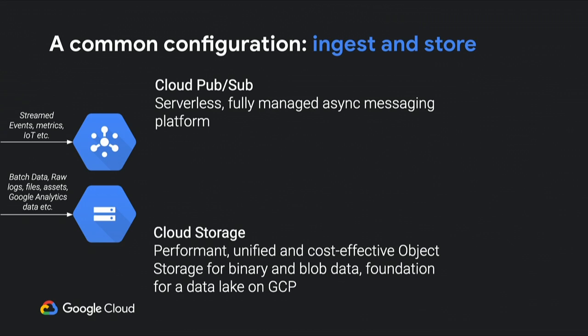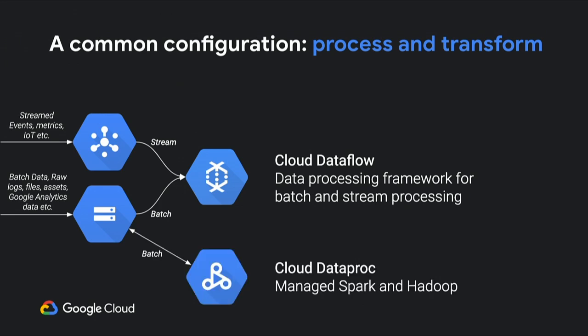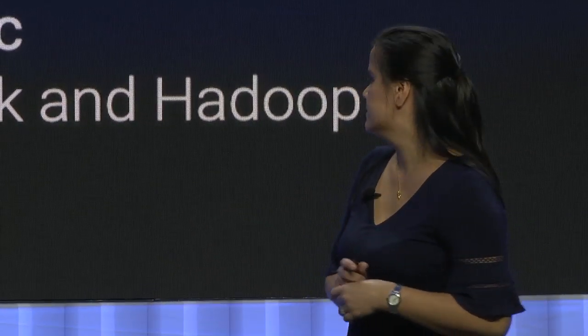Cloud Dataflow has connectors to Pub/Sub and to Cloud Storage, and it's able to process our data and apply transformations as needed, for both batch and streams. One interesting thing about Dataflow is that for real-time streaming data you can apply windowing functions, where you take an aggregate of the data being read in and pass that downstream. We can also use Dataproc — if you already have Spark and Hadoop jobs, you can migrate them over to Dataproc.